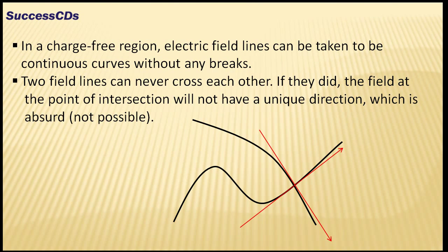In a charge free region, electric field lines can be taken to be continuous curves without any breaks. Also, two field lines can never cross each other. If they did, the field at the point of intersection would not have a unique direction, which is absolutely absurd as shown in the picture.